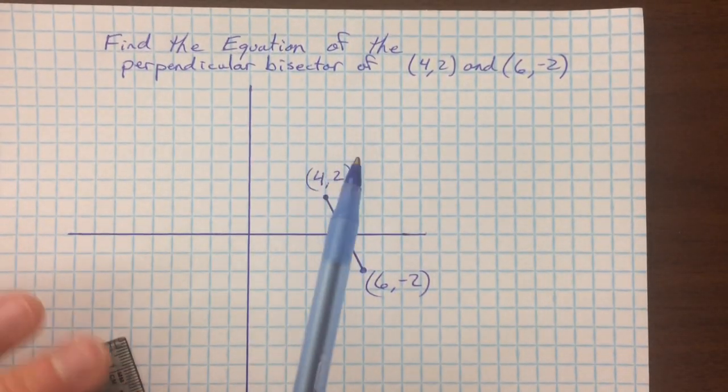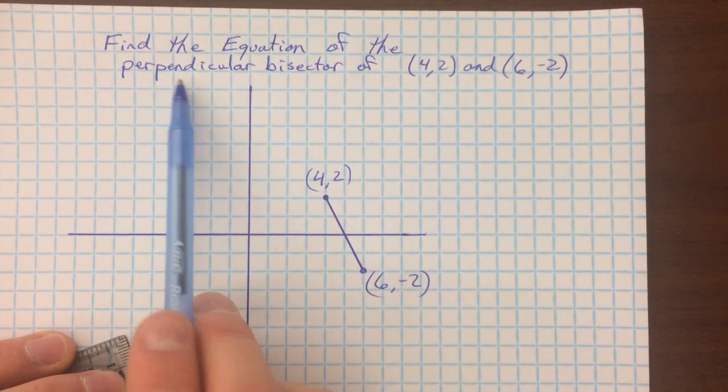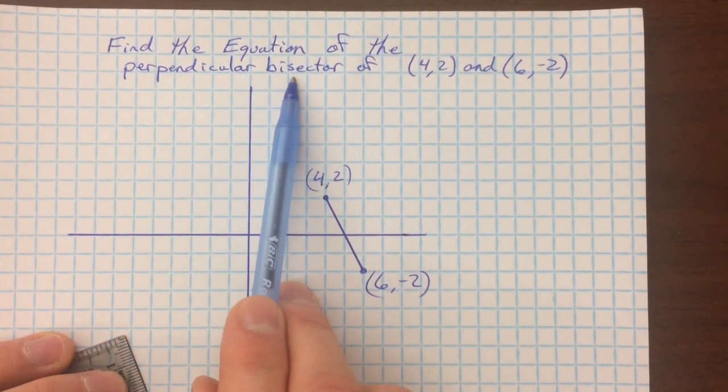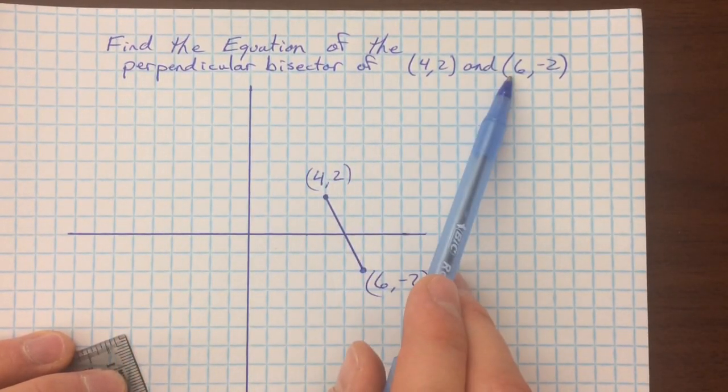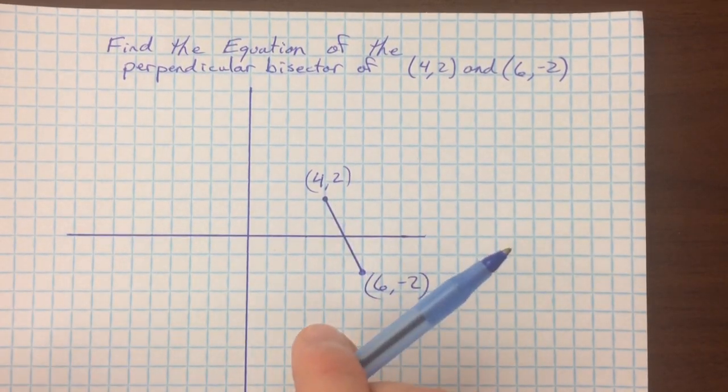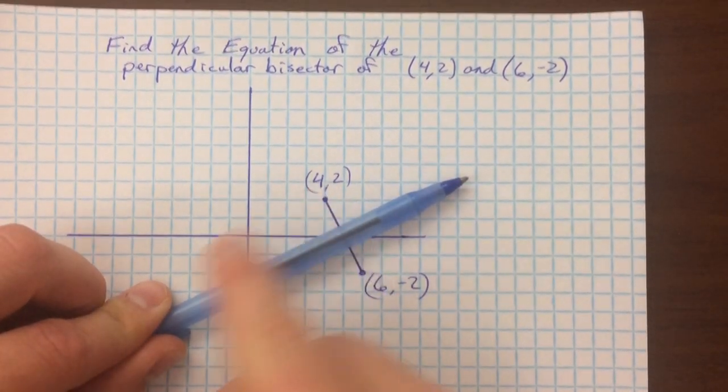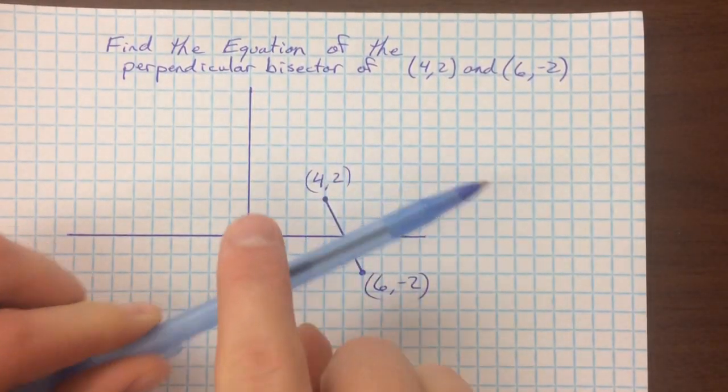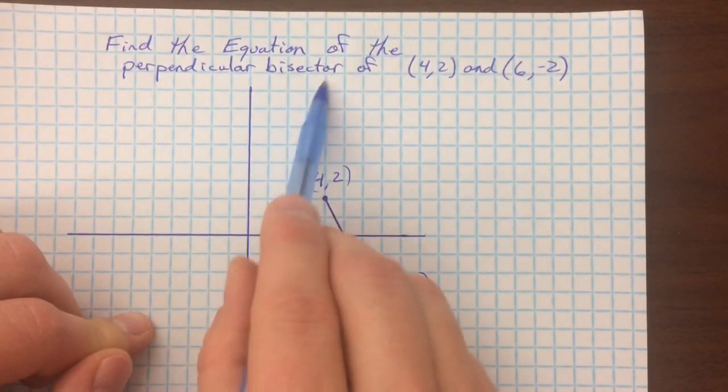For the next problem, we want to find the equation of a line that is a perpendicular bisector of (4,2) and (6,-2). Perpendicular bisector means we want it to make a 90 degree angle, and it needs to bisect, meaning cut in half.